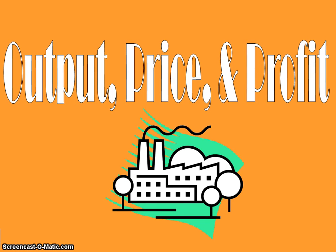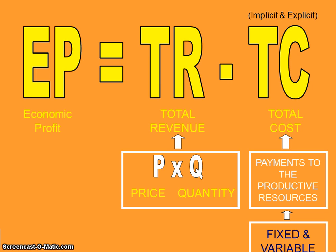In this lecture, we're going to look at output, price, and profit, and how companies determine how to maximize their profits. Profit is all the money that you bring in from selling your output, and then subtract your cost of production. Economic profit is total revenue — which is the price of your product multiplied by the quantity of sales — minus your total cost.